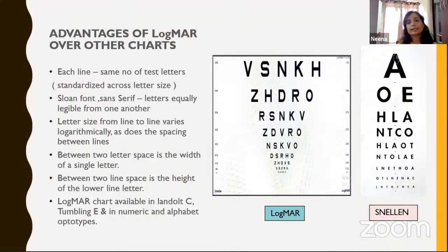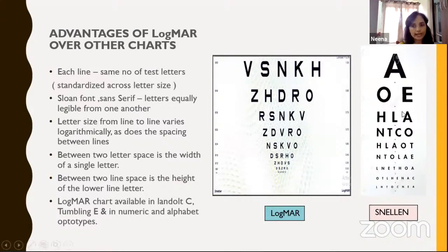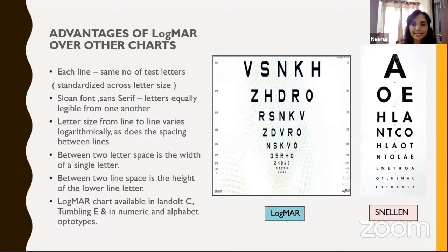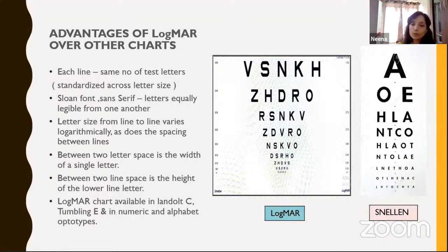What is the advantage of LogMAR over Snellen's chart? Each line of LogMAR has the same number of letters — five — as it progresses downward, whereas Snellen's differs per line. The font is a sans-serif font, meaning there are no letter strokes, making it harder to memorize. Children can sometimes memorize the Snellen's chart and read it by heart, whereas LogMAR is more difficult to bluff. Letter size and spacing vary logarithmically, and the chart is also available in Landolt C, Tumbling E, and numbers.